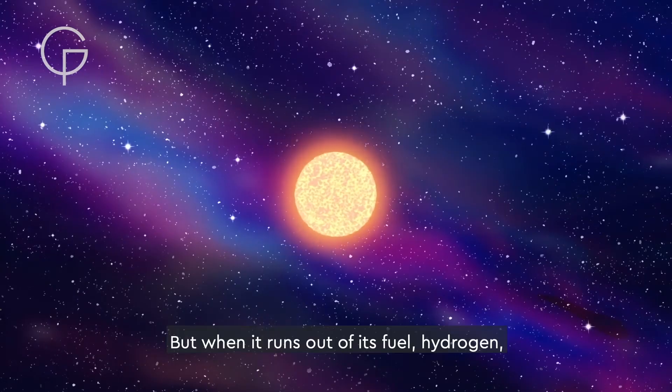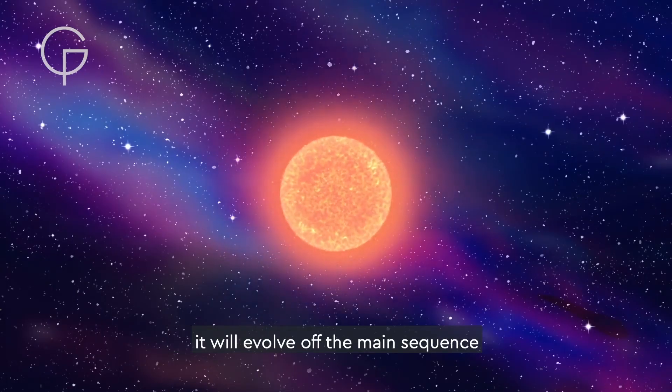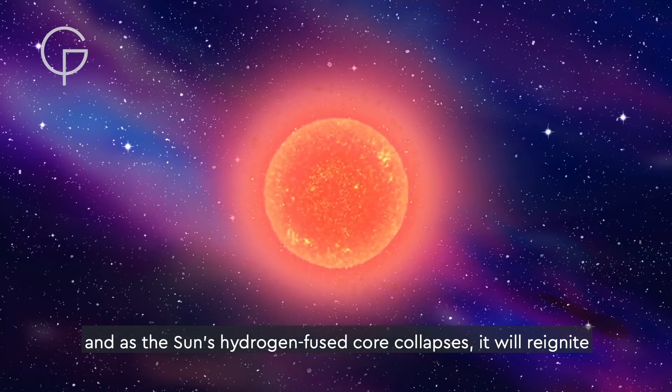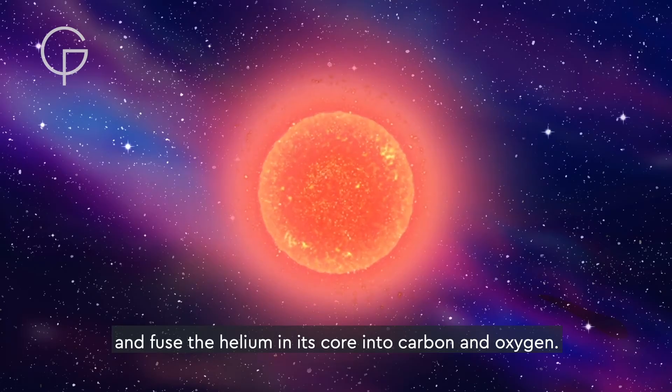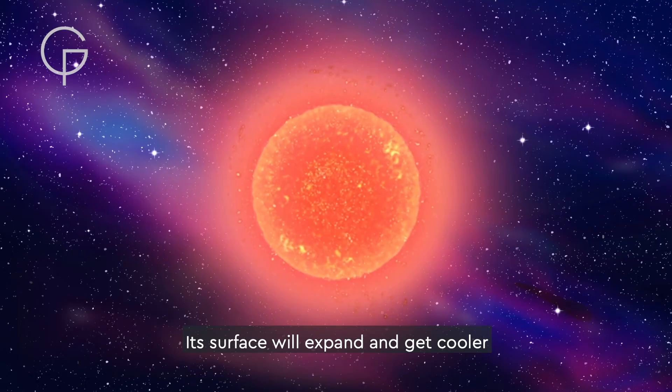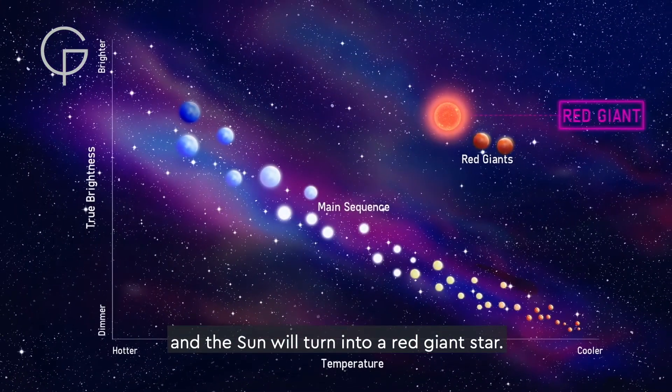But when it runs out of its fuel, hydrogen, it will evolve off the main sequence, and as the Sun's hydrogen-fused core collapses, it will reignite and fuse the helium in its core into carbon and oxygen. Its surface will expand and get cooler, and the Sun will turn into a red giant star.